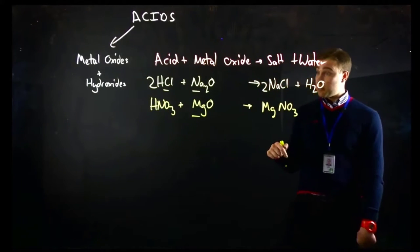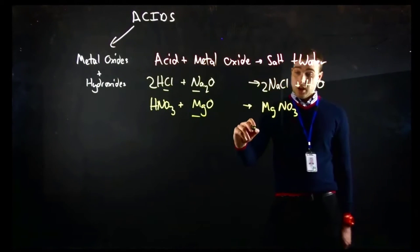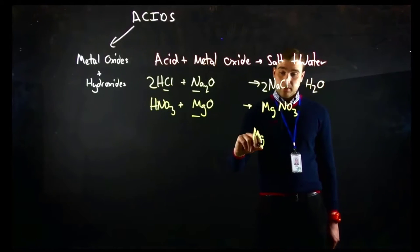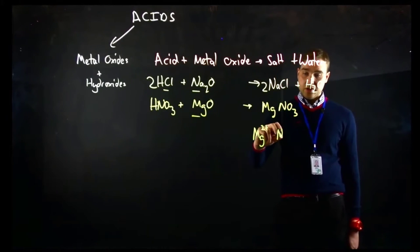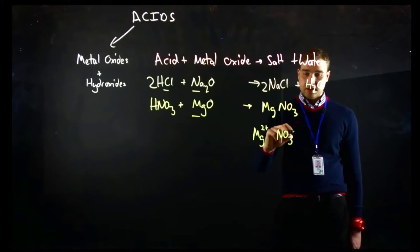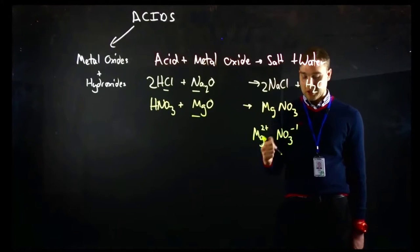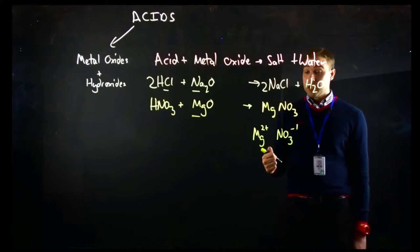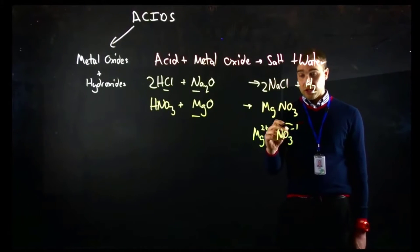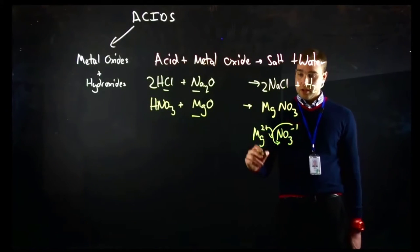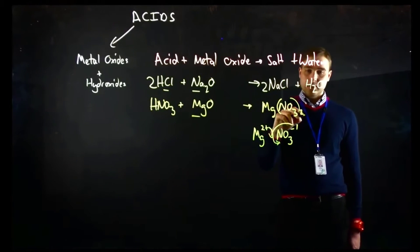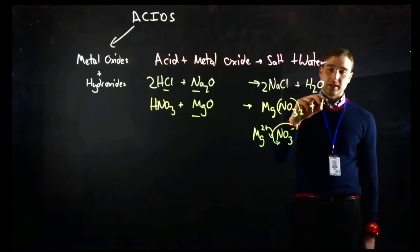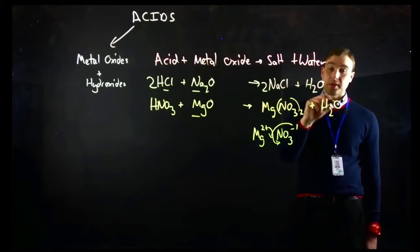Now we've got a bit of a problem: magnesium has a 2+ charge and the nitrate ion has a charge of minus 1, so we need to do our crisscross technique — so we get Mg(NO₃)₂. Now we need to add water.